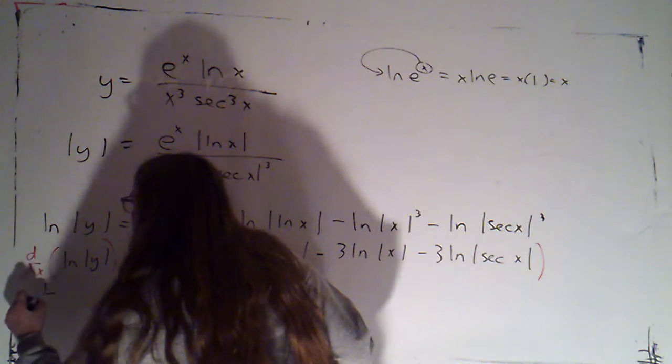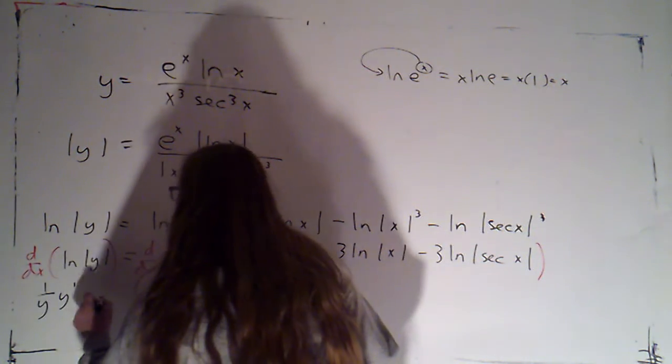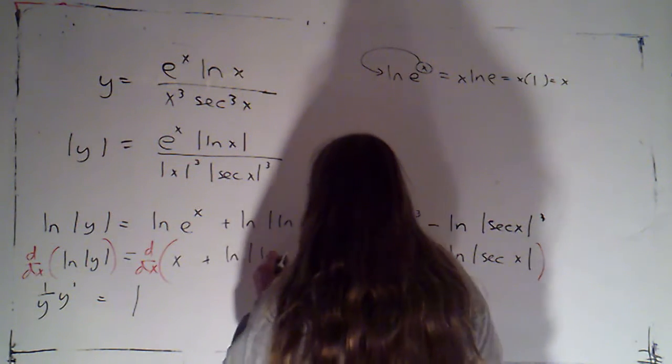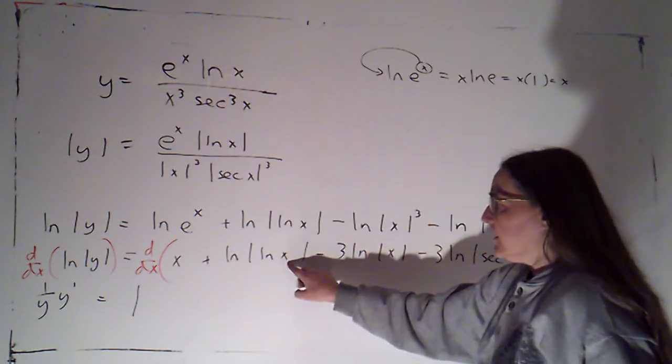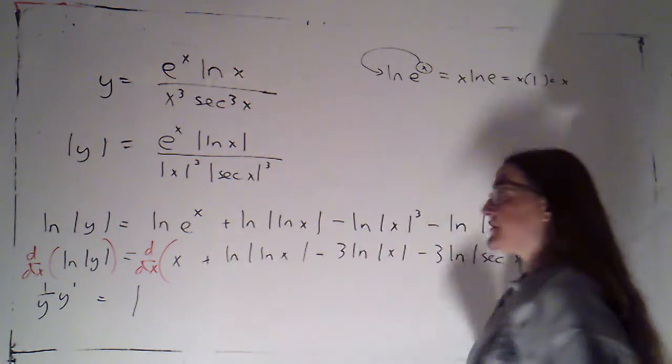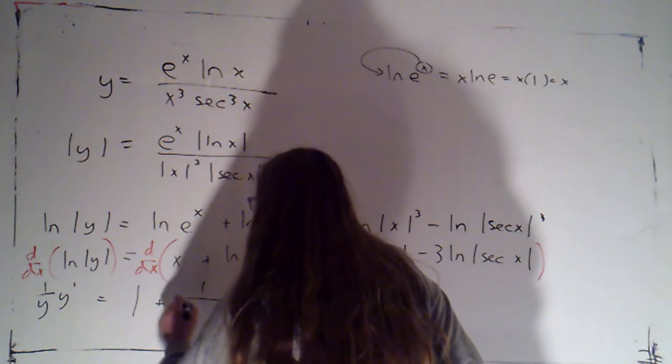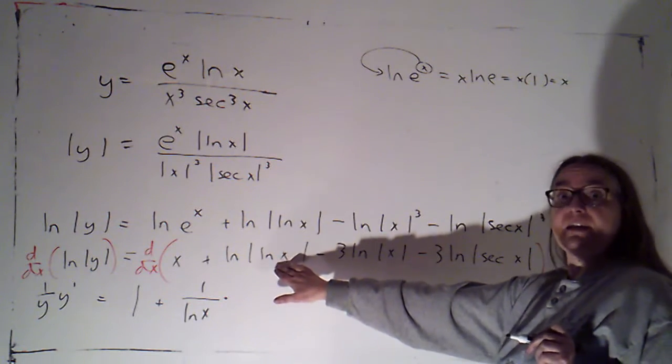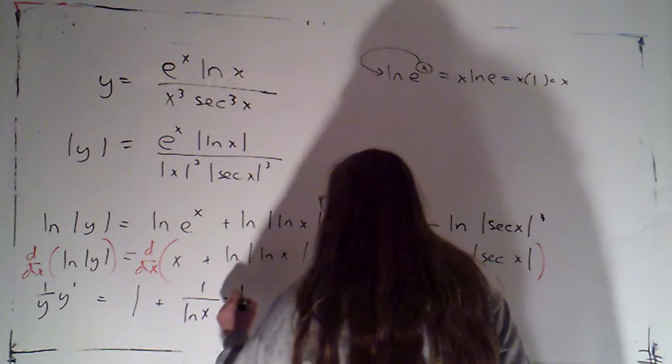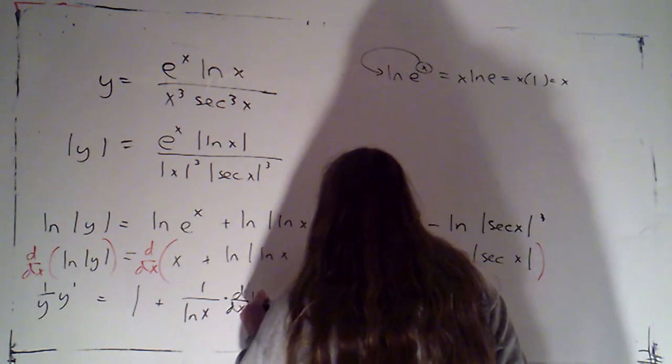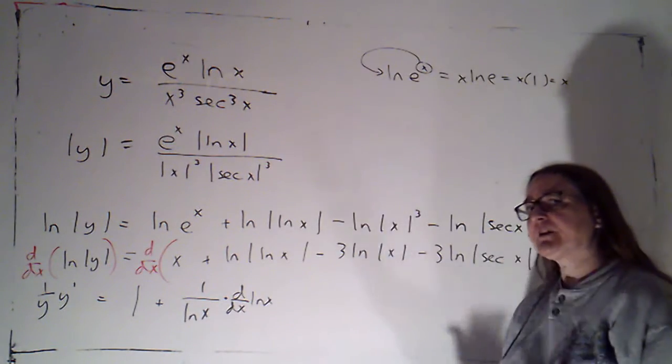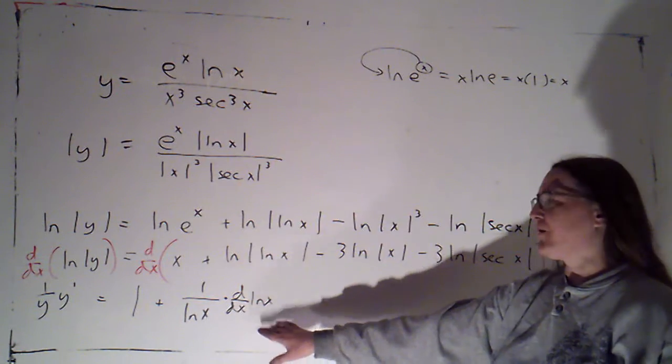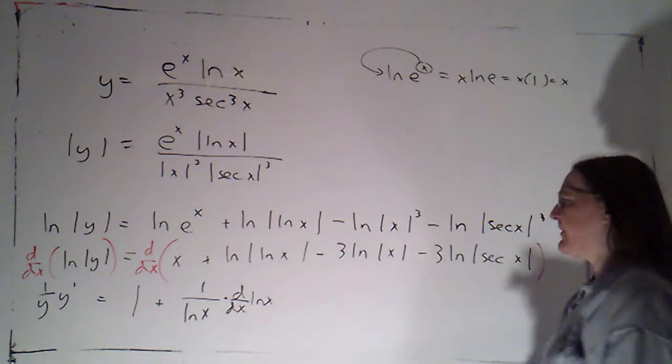So here, we get 1 over y, y prime. Here, the derivative of x is 1. Here, the derivative of the natural log of the absolute value of something, is the reciprocal of that thing, times the derivative of the natural log of x. Now I'm going to actually write that in. Again, we may be starting to get comfortable enough with chain rule that you feel comfortable going right to 1 over x instead of writing in the d by dx. And that's fine if you are.